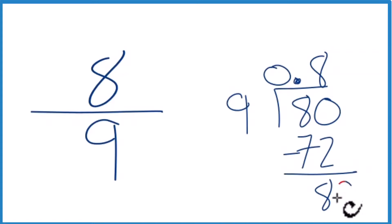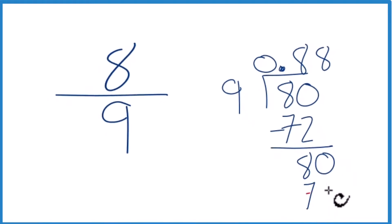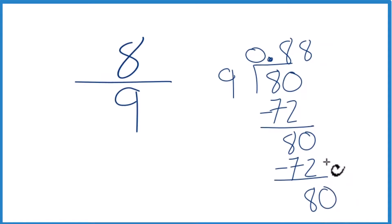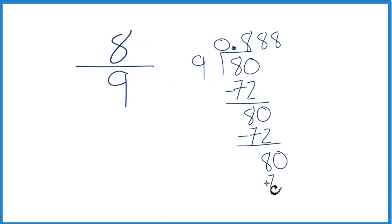So 9 doesn't go into 8, but if we call this 80 and move over 1, 8 times 9, that's 72. And we subtract and we get 8 again. So we call it 80, we move over 1, 8 times 9, that's 72. We subtract, we get 8. And you can see that 8, it just repeats.